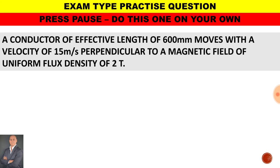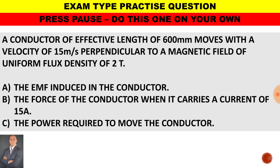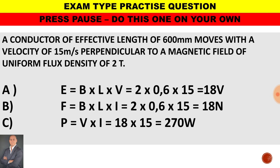Now this is an exam-type question — hit the pause button and practice it for yourself. A conductor of effective length 600 millimeters moves with a velocity of 15 meters per second, perpendicular to a magnetic field of uniform flux density of 2 Tesla. Part A: what will the EMF induced be? What will the force on the conductor be when it carries a current of 15 amps? And what will the power required to move the conductor be? Here are the answers — check that you used the correct formulas, substituted the correct values, and obtained the correct answers. If you're still struggling, go back to the beginning of the video and try again.